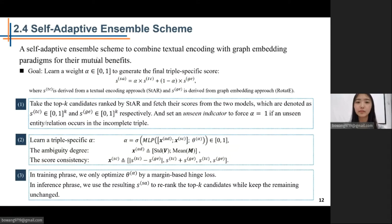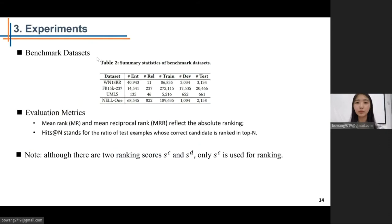Next, learn a triple-specific alpha. XAD denotes the ambiguity degree, consists of the standard deviation of the top-k entities representations V and the average values of the largest 100 cosine similarities M between each candidate and all entities. XSC denotes the score consistency between two approaches. In training stage, we only optimize STAR by a margin-based hinge loss. In inference stage, we use the resulting SSA to re-rank the top-k candidates while keeping the remaining unchanged. Let's see the experiments now. We assessed the proposed approach on three popular and one zero-shot link prediction benchmarks. And we use MR, MRR, and hits@N as evaluation metrics. Note, only SC is used for ranking. Other options will be discussed in the ablation study.